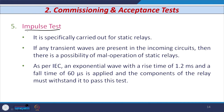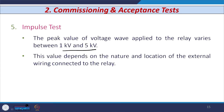The fifth type of test is known as the impulse test. This is a special test carried out on static relays — it is not performed on electromechanical relays. If any transient waves are present in the incoming circuit, there is a possibility of mal-operation of the relay, so this test is carried out to avoid that. An exponential wave with a rise time of 1.2 milliseconds and a fall time of 60 microseconds is applied. The peak value of the voltage wave can vary from 1 kV to 5 kV, depending on the nature and location of the external wiring connected to the relay.